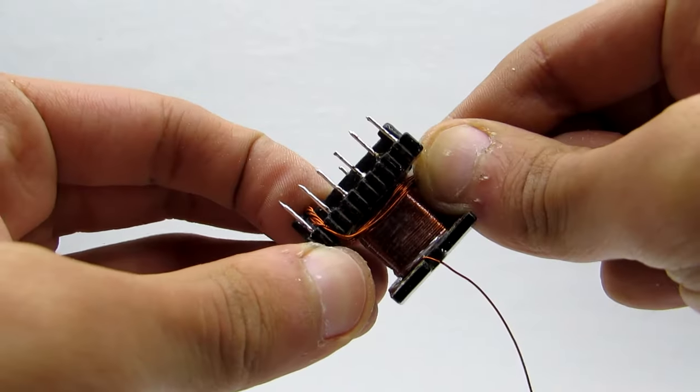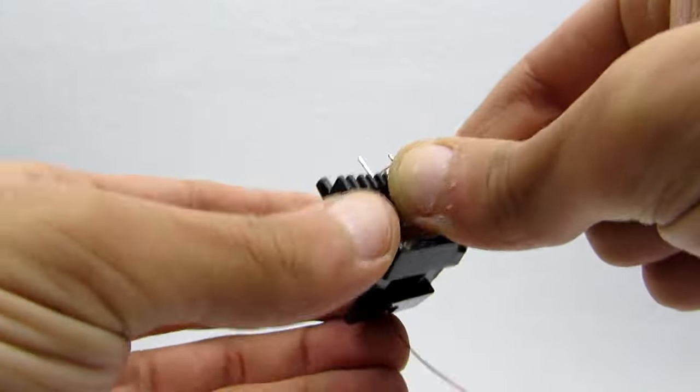Then wound primary winding. It is 5 turns in one layer. Isolate with several layers of tape.